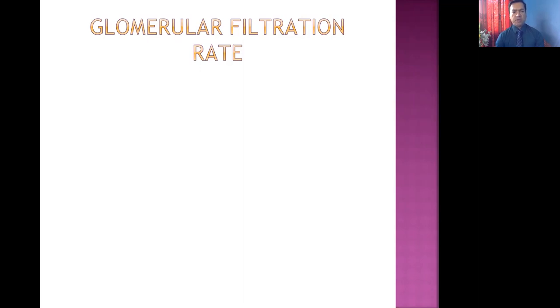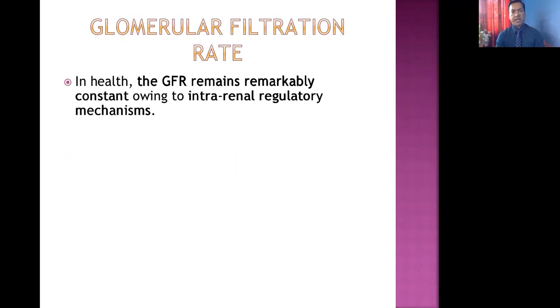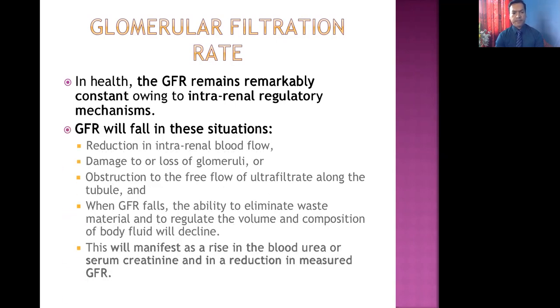The normal GFR is around 120 ml per minute — that much filtrate is formed inside the Bowman's capsule. In healthy people, the GFR remains remarkably constant because of intrarenal regulatory mechanisms. Our body can regulate the mechanism at the local level, so in the kidney, GFR can be maintained constant because of these regulatory mechanisms.